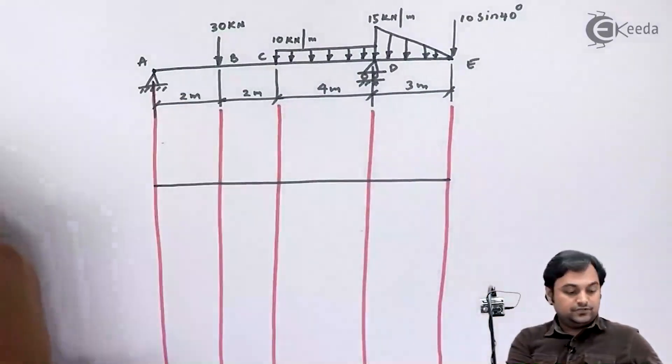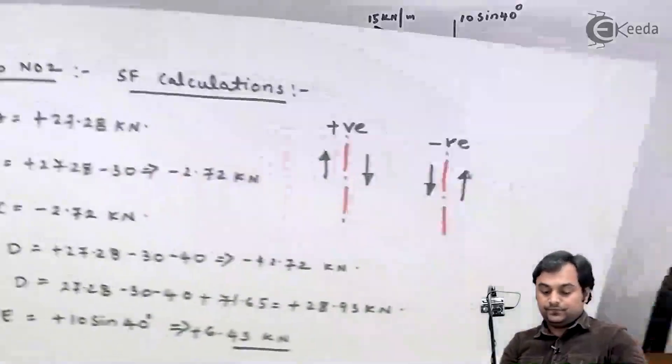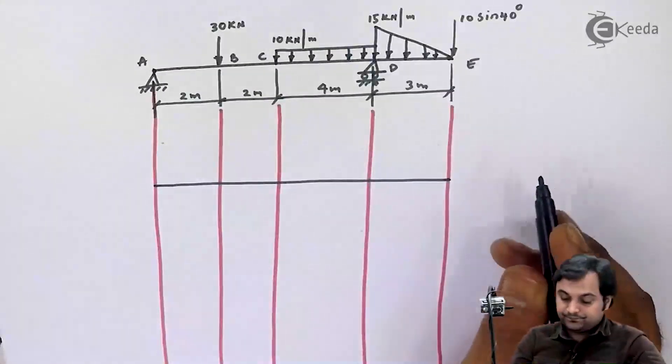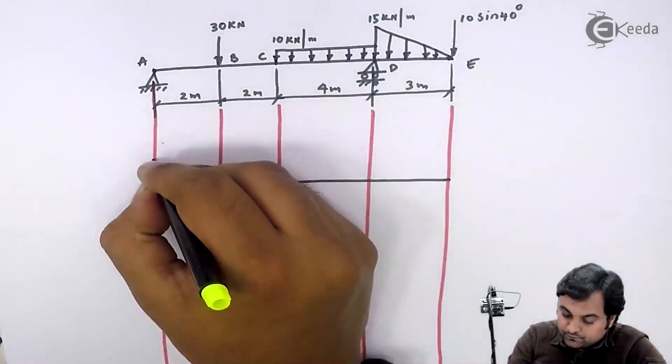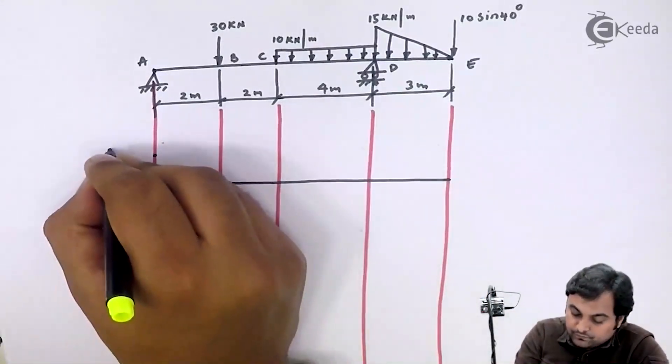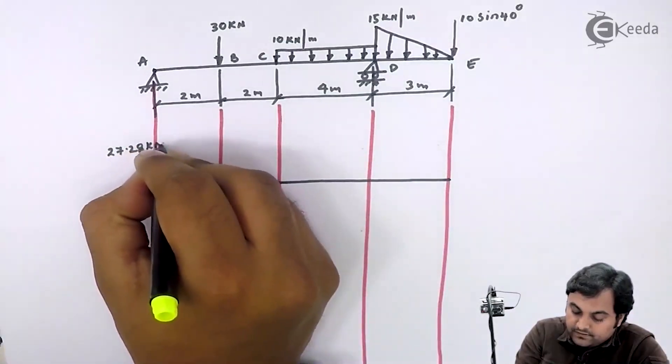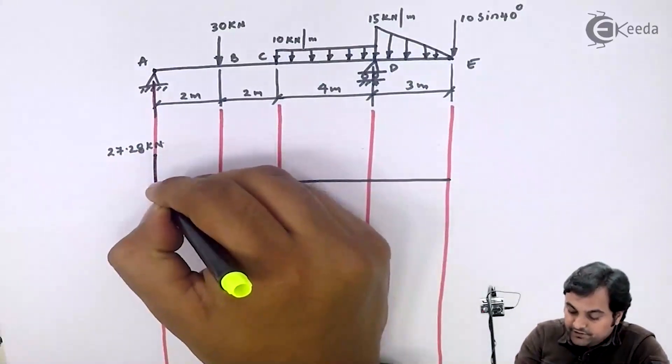I am getting shear force at a value as 27.28 positive. This value will remain constant between A to B.